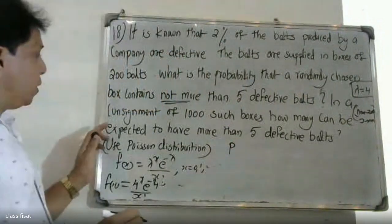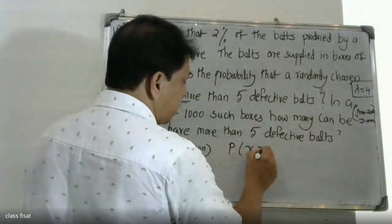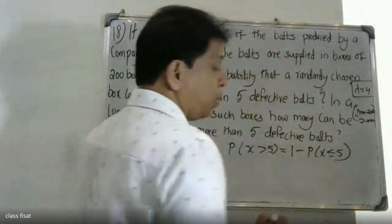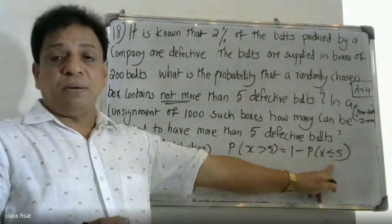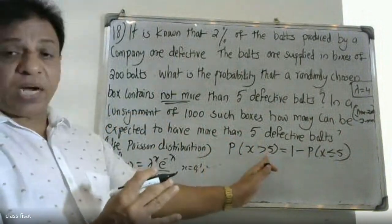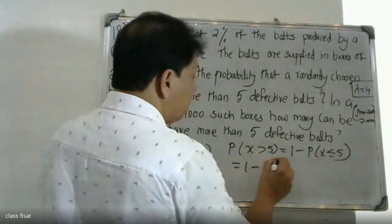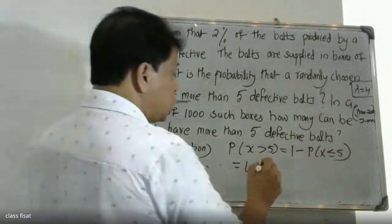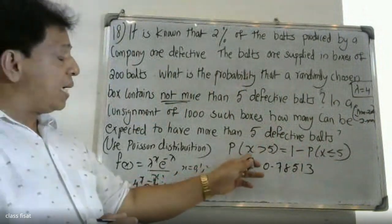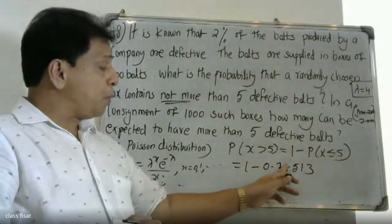For the second question — how many boxes can be expected to have more than 5 defective boards — we need P(X > 5). This equals 1 minus P(X ≤ 5), that is 1 minus 0.78513.